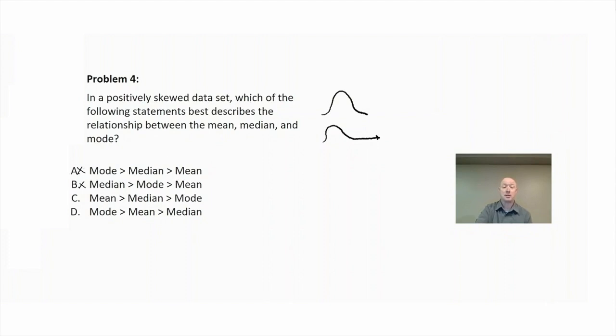So that means that choice D is eliminated. In this case, the correct answer would be choice C. The mean would have to be greater than the median and greater than the mode.